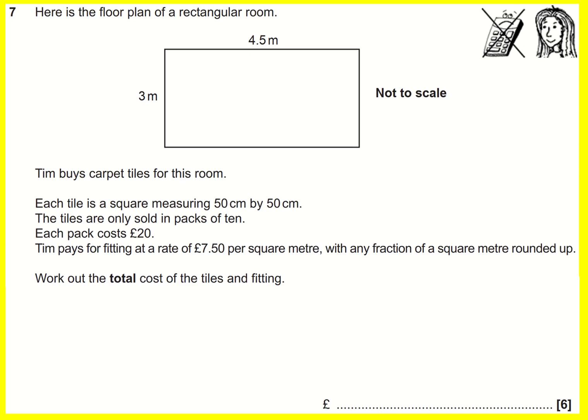Kind of a real-life maths problem here — buying carpet tiles for a room and trying to work out the cost. The first thing to note is that we've got square tiles, 50 centimetres by 50 centimetres. However, the room is measured in metres, so a good idea is to change metres into centimetres: 300 centimetres and 450 centimetres.